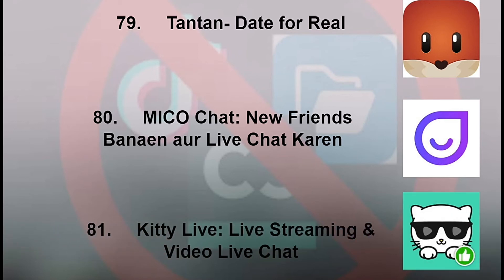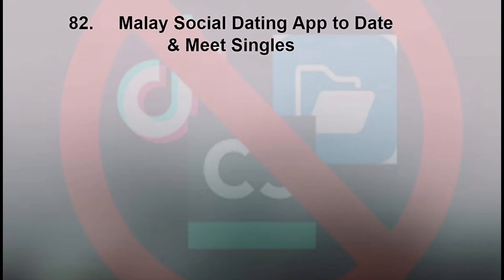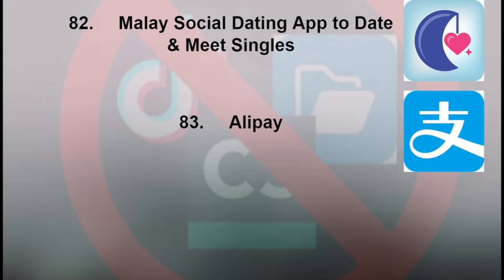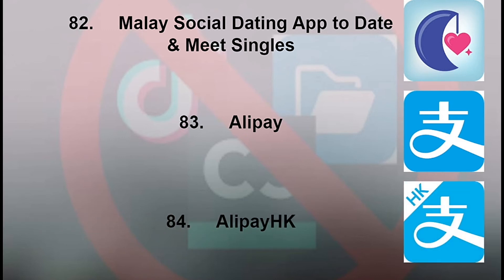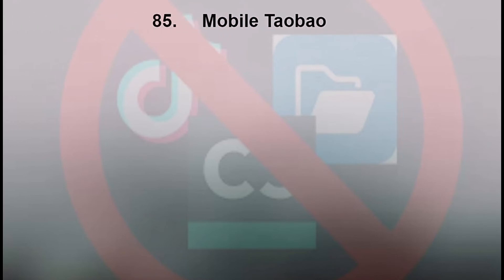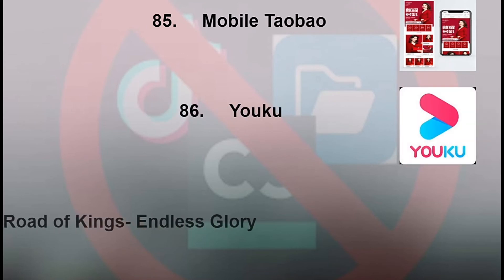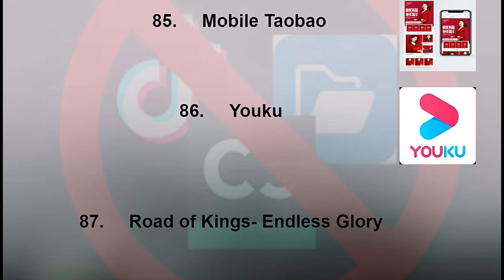81: Kitty Live - Live Streaming and Video Live Chat. 82: Malay Social Dating App to Date and Meet Singles. 83: Alipay. 84: Alipay HK. 85: Mobile Taobao. 86: UKU. 87: Road of Kings and Less Glory.